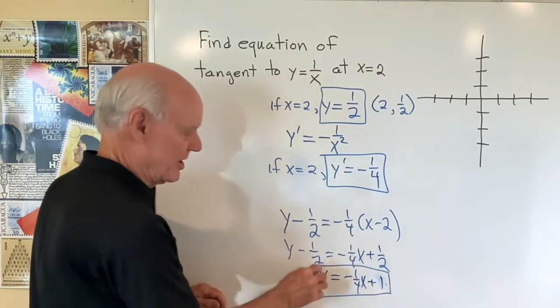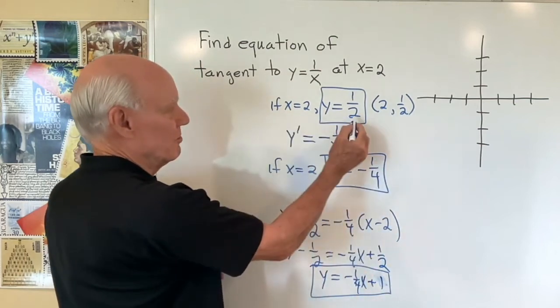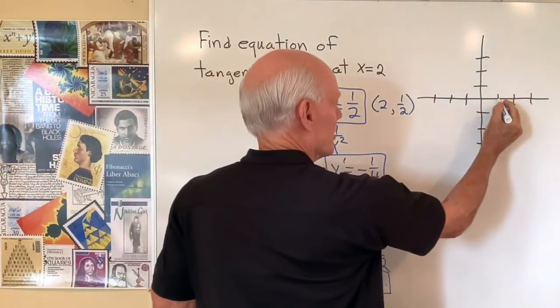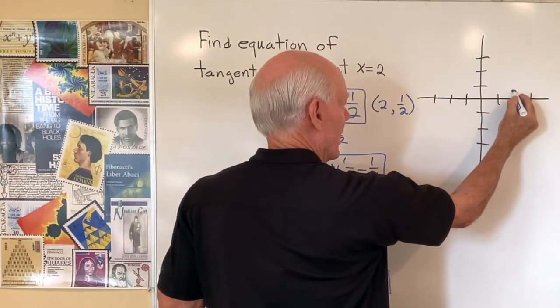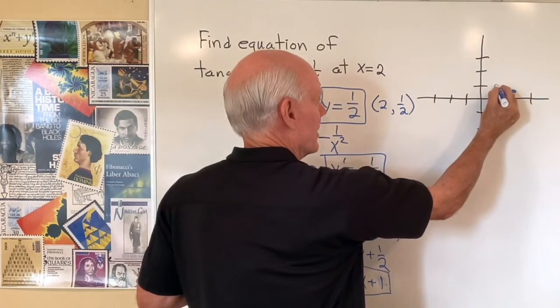Okay, so that's the equation of the line tangent. Let's see. When x is equal to two, y is equal to one half. So x is equal to one, two, y is equal to one half. When x is equal to one, y is equal to one. So I have this point right here.